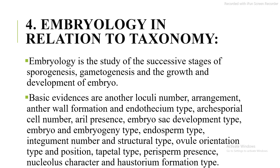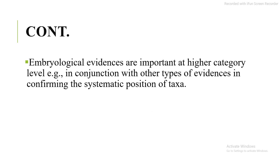Fourth, embryology in relation to taxonomy. Embryology is the study of the successive stages of sporogenesis, gametogenesis, and the growth and development of the embryo. Basic evidences include anther loculi number and arrangement, archesporial cell formation, endothecium type, archesporial cell number, embryo sac development type, embryo and embryogeny type, endosperm type, integument number and structural type, ovule orientation type and position, tapetal type, perisperm presence, and haustorium formation type.